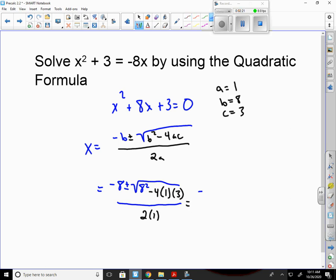I'm going to start solving this. Negative 8 plus or minus 64 minus 12. 8 squared is 64, 4 times 1 times 1 times 3 is 12. All over 2. Gives me negative 8 plus or minus the square root of 52 over 2.